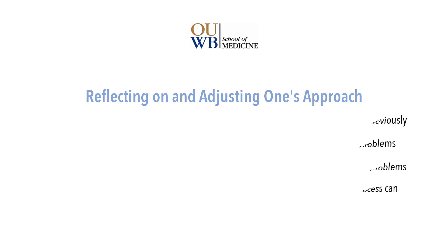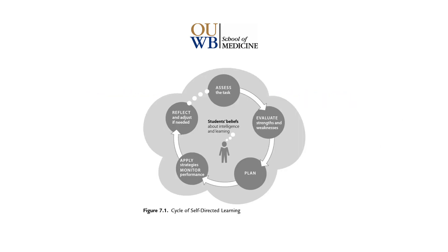Explicitly showing how one strategy versus another can impact problem solving can be a good method for getting students to reflect upon the potential value of adjusting one's approach. As seen in figure 7.1, students' beliefs about intelligence and learning also impact how likely they are to become self-directed learners. In particular, whether or not students believe learning is fixed or malleable is especially important, as learners who feel they cannot learn something are less likely to engage in these processes.